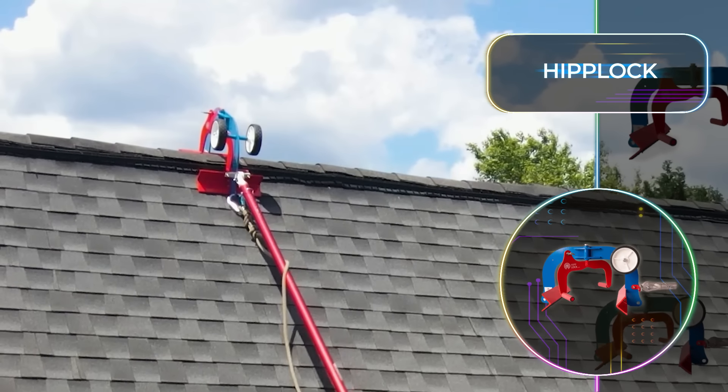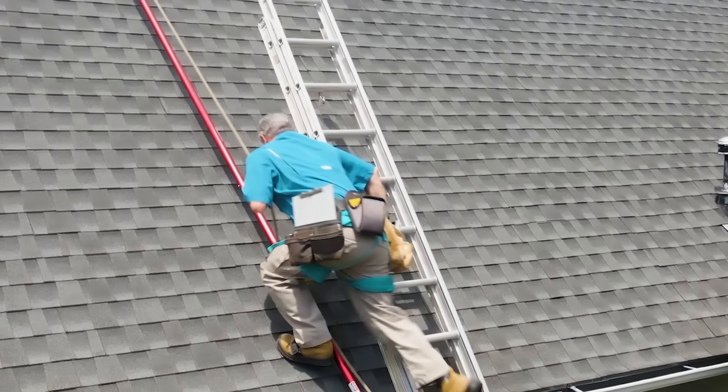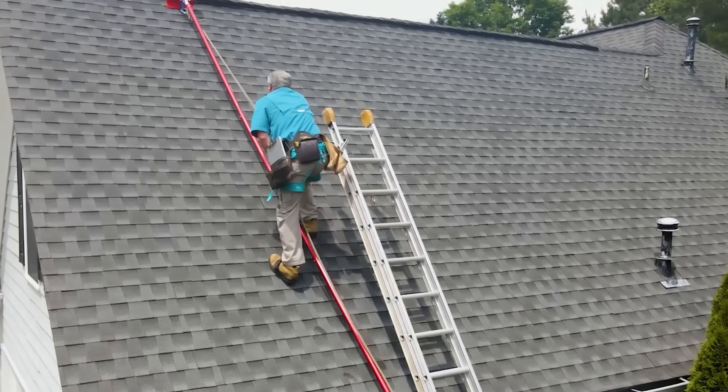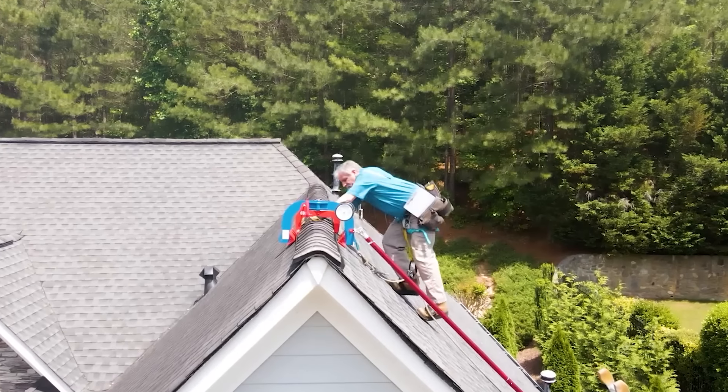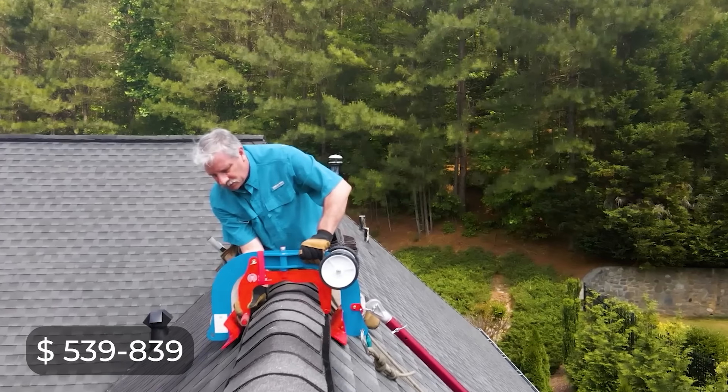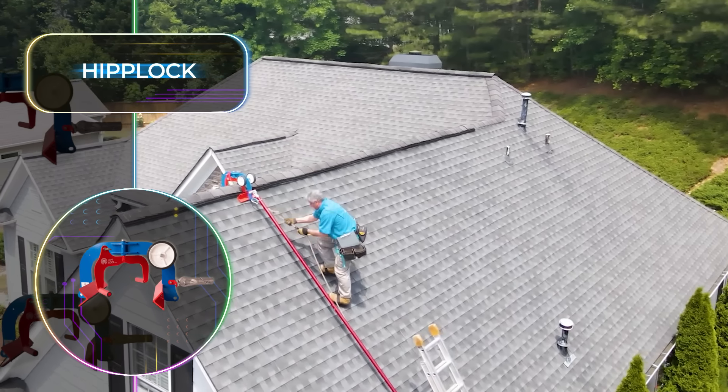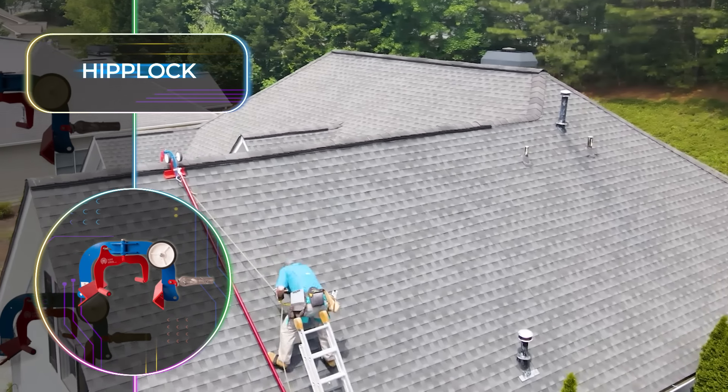Thanks to the clever addition of wheels, it goes with you wherever you need to go. Setting it up, packing it away, or transporting it is incredibly easy. When it's securely attached to the ridge, it covers your entire workspace, keeping you safe from every angle. The Hip-Lock systems with added poles range from $539 to $839.